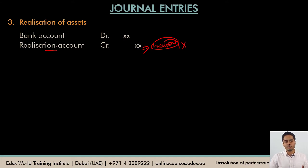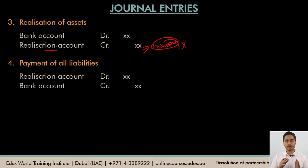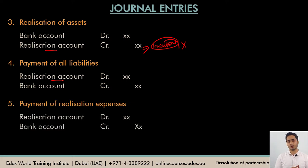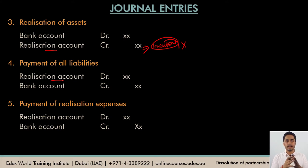All entries after this will be passed using the realization account. We will also have to pay our outside liabilities or third-party liabilities: bank account would be credited and we debit our realization account. Do not try to debit the individual liabilities account because the balances in those liabilities are already transferred to the realization account and closed. The firm might also have to meet some realization expenses — the entry is exactly the same: realization account is debited and bank account is credited.